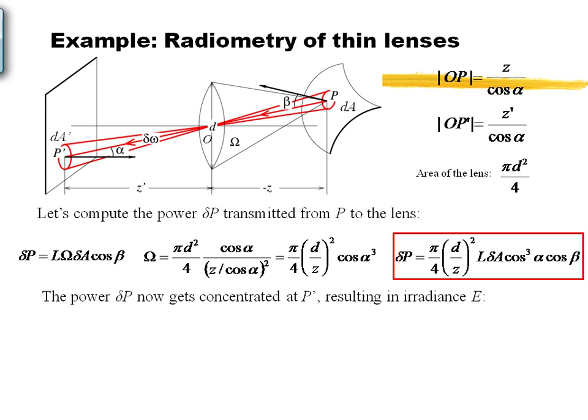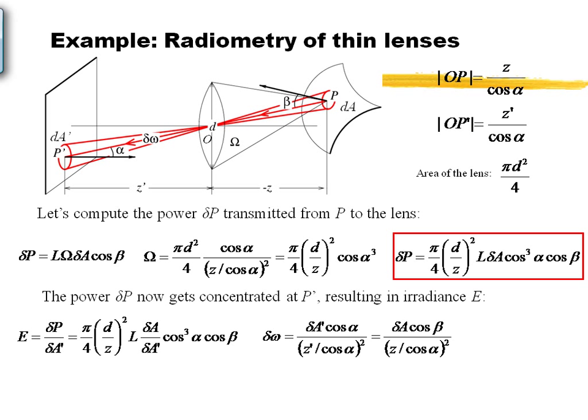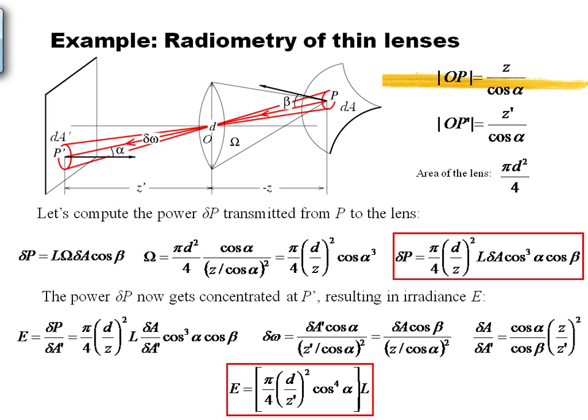Now I also have to measure the amount of energy going onto the image point — that's the irradiance coming in. The irradiance is the amount of energy that arrives there, projected onto the patch corresponding to point P with area delta A prime. We can write it out in the same fashion, computing the area projected down onto the foreshortened area. Now I can plug everything back in and end up with a relationship between E and L.